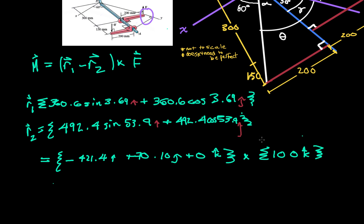And so that crossed with 100 in the k, because this is our force from the question description, equals 7.01 in the i, plus 42.1 in the j, plus zero in the k. And so that with Newton meters is our final answer.